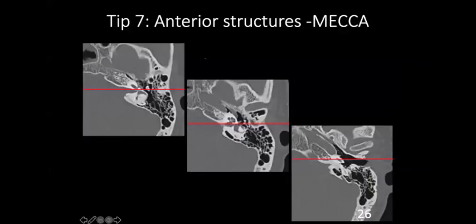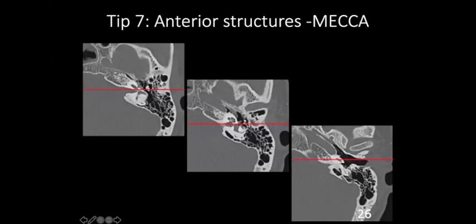One more orientation — I call this MECCA. What are the anterior structures in the temporal bone? Looking at the mesotympanum anteriorly and drawing a line to the middle of the vestibule: first you see the head of the malleus — M of MECCA. Going lower, you have the Eustachian tube — E. Then Cochlea — cochlea is anterior and medial. At a lower level, you see the Carotid artery — internal carotid artery. And we have anterior epitympanum in the upper part — A. Remember the MECCA mnemonic for all anterior structures.